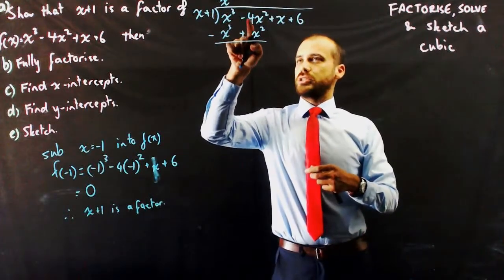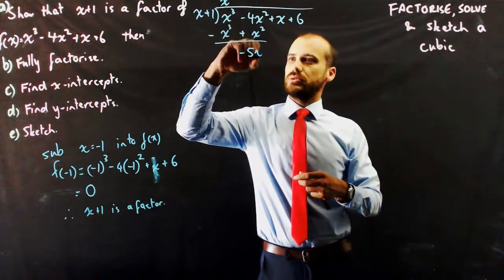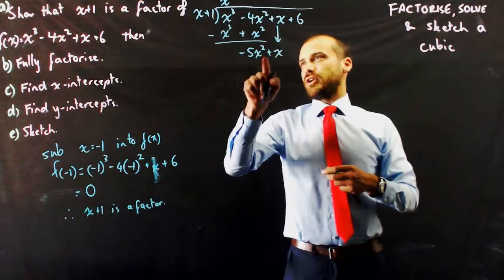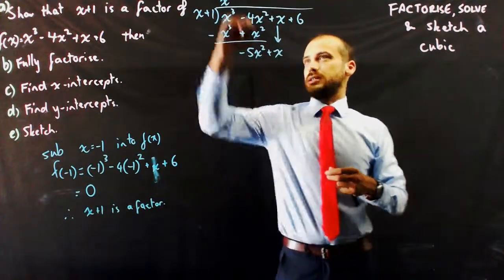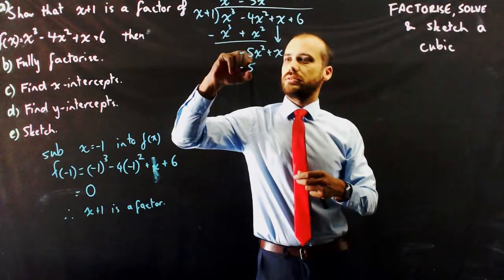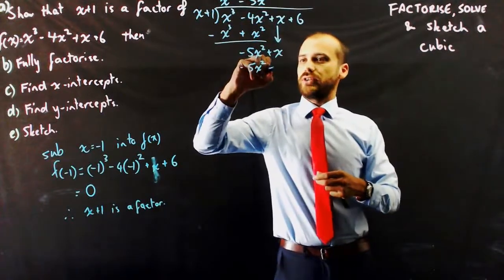x cubed minus x cubed. Minus 4x squared minus plus x squared is minus 5x squared. Bring the x down. Negative 5x squared divided by x is negative 5x. Negative 5x times x is negative 5x squared. Negative 5x times 1 is negative 5x.